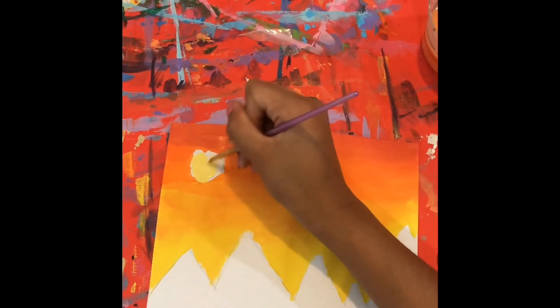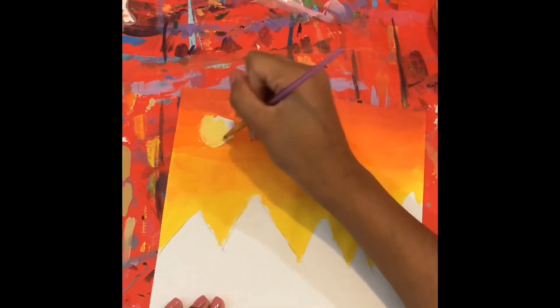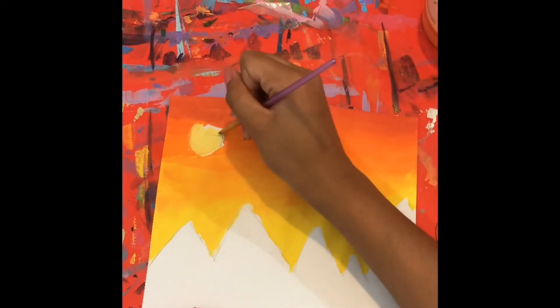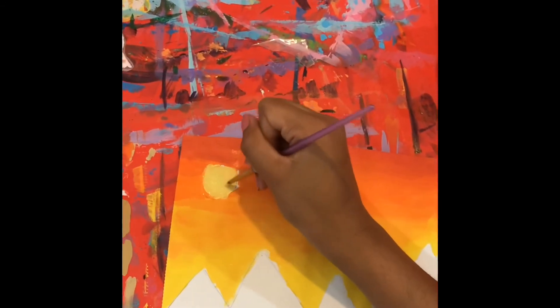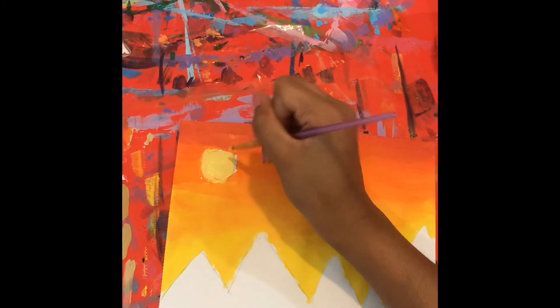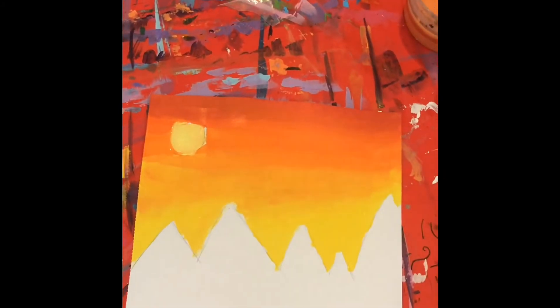You just want to fill in your beautiful sun. You don't want to leave any white spaces so you can paint over. Now you have your sun.